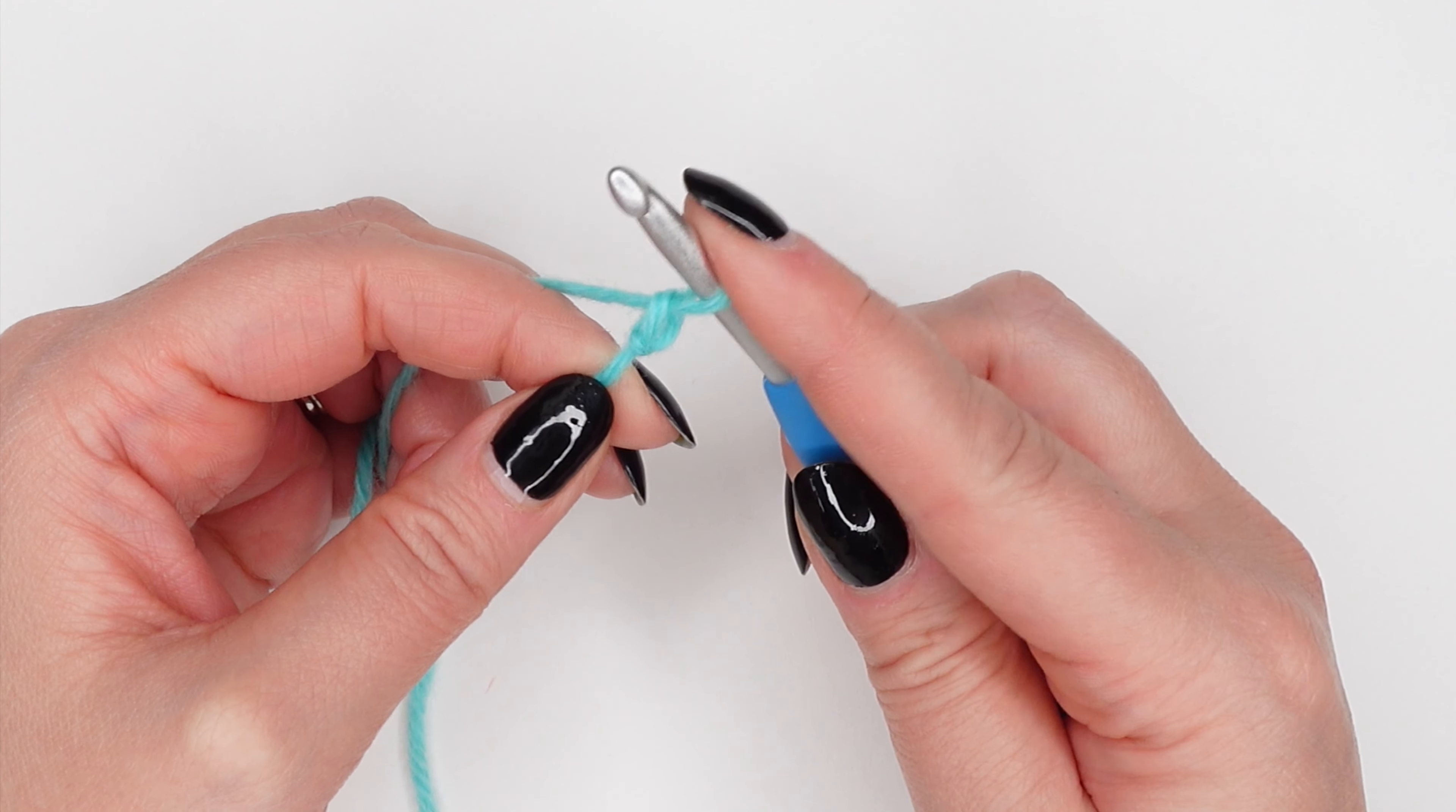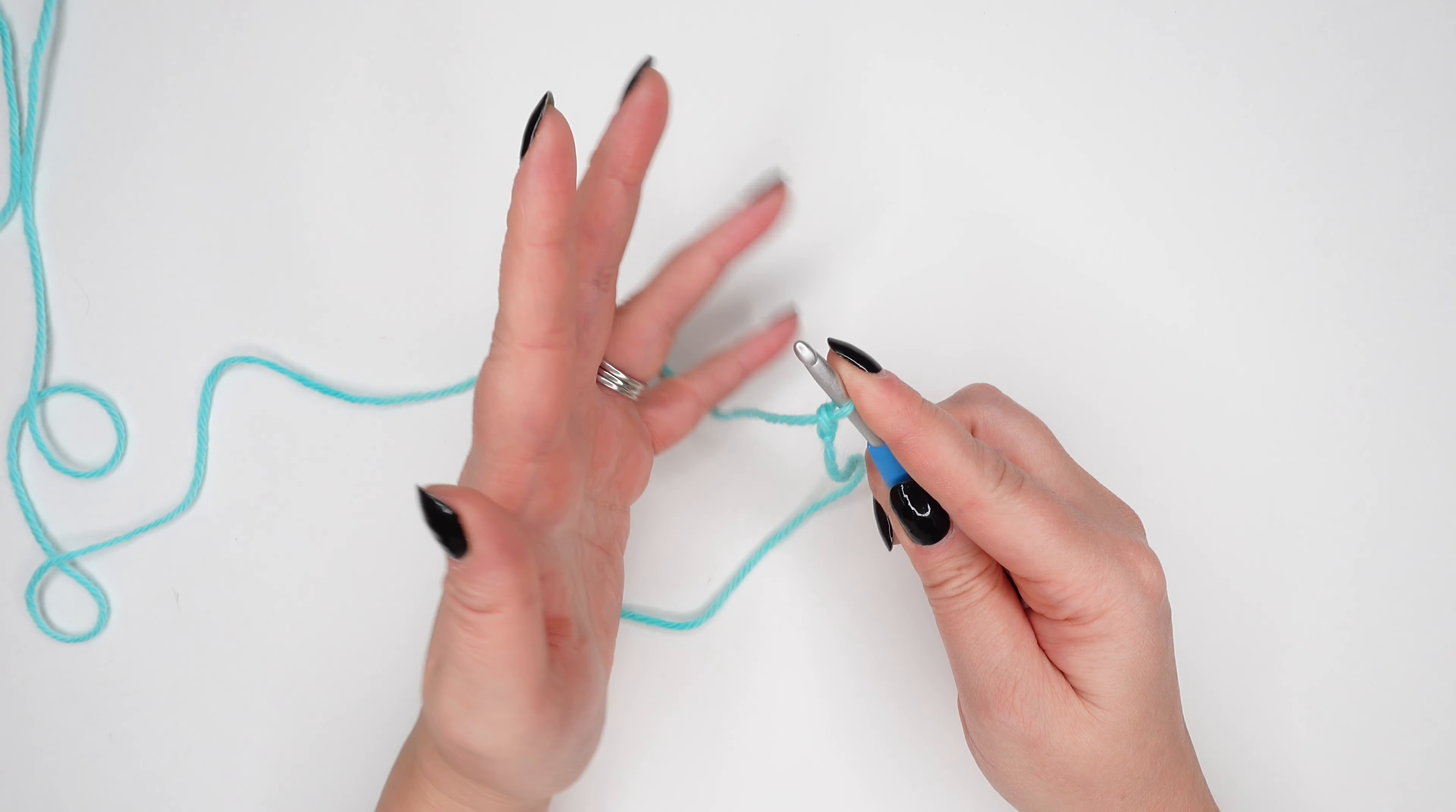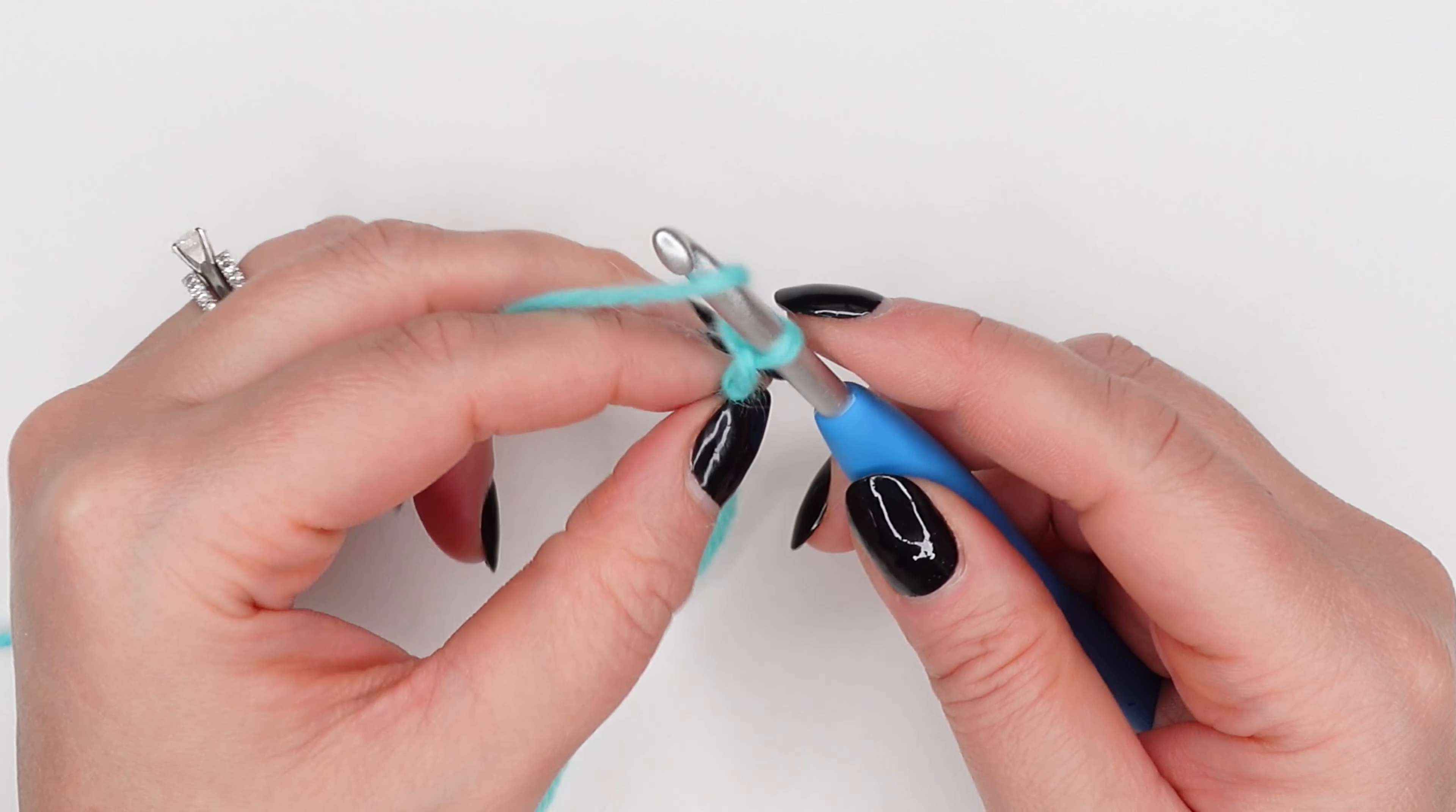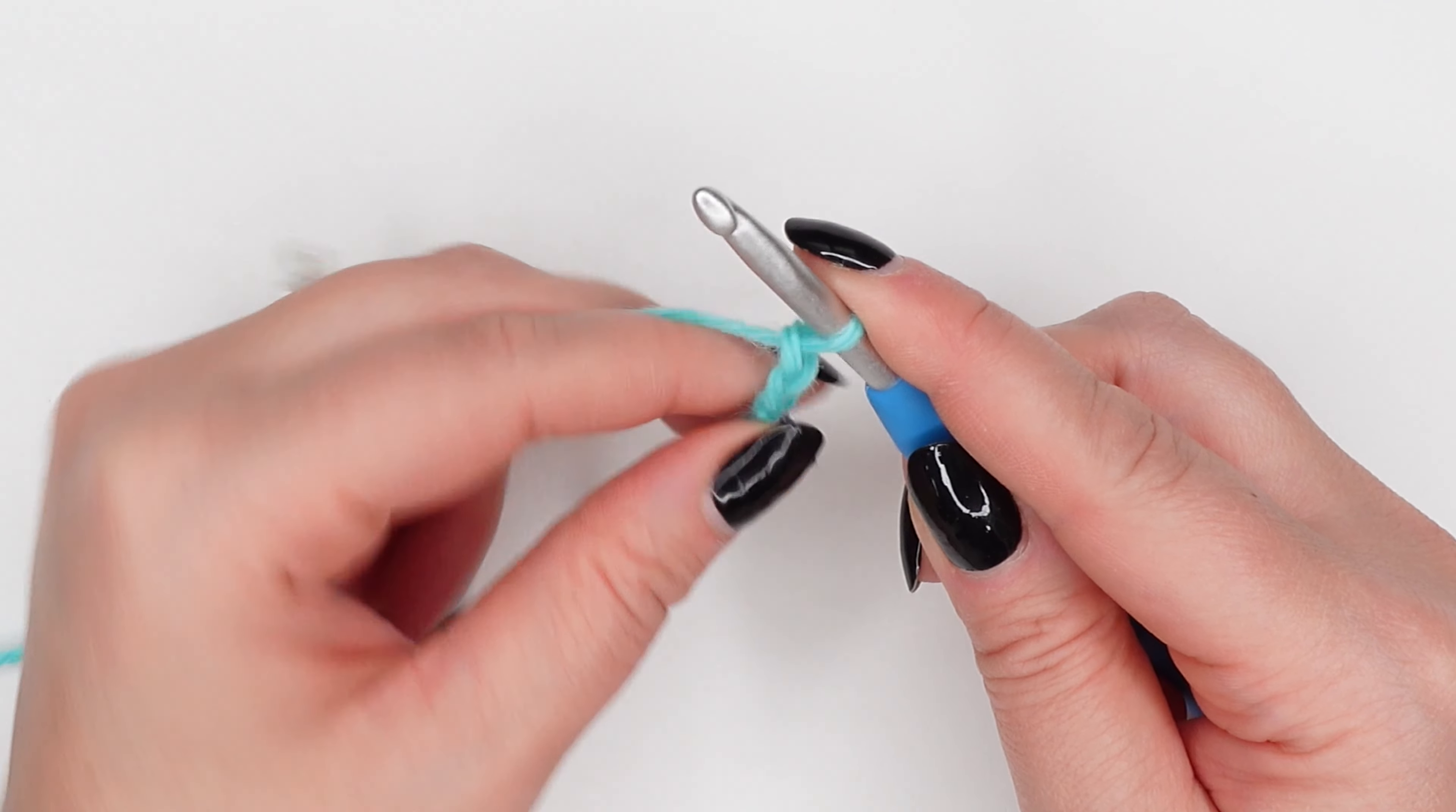Now use your pointer finger to secure the loop on your hook and take your hand out of crochet position and reposition it. We are going to repeat this process. Wrap the yarn around your hook from back to front. Use your thumb and pointer finger to gently pull down on the chain off of your hook and on the yarn tail to give yourself a little bit of leverage, and then pull the yarn through the loop on your hook.